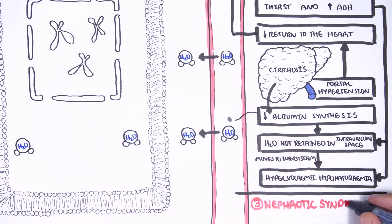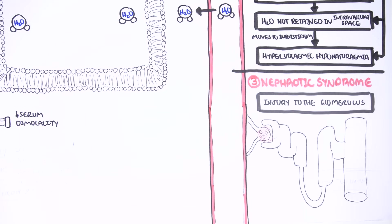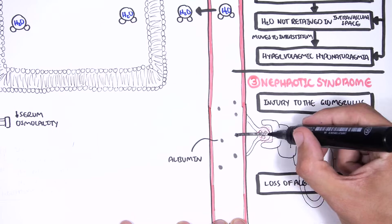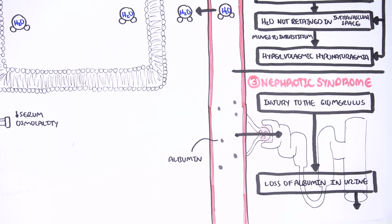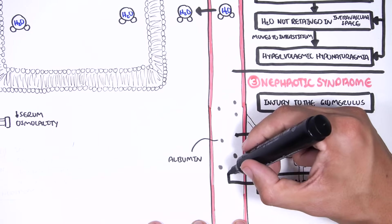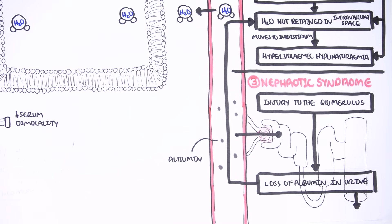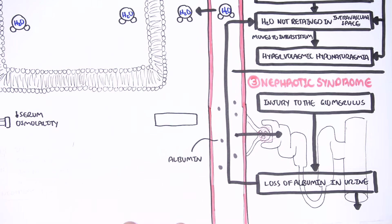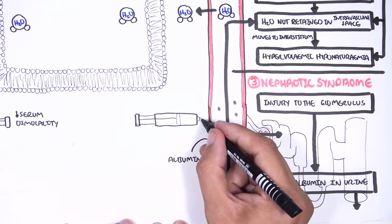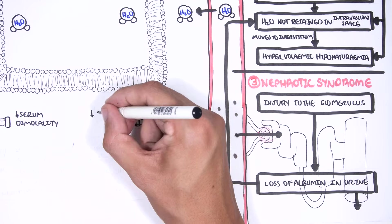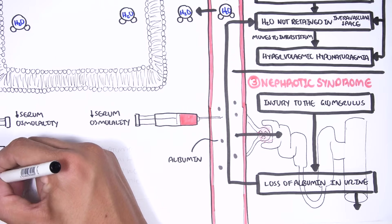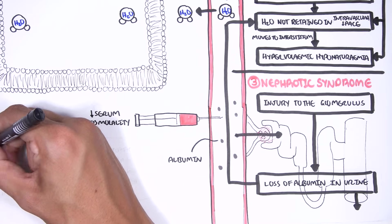In nephrotic syndrome, there is damage of the glomerulus, allowing proteins such as albumin to leak out, resulting in hypoalbuminemia. With low albumin in plasma, water is not retained in the intravascular space, causing a reduced arterial volume, stimulating thirst and antidiuretic hormone release. This leads to hypervolemic hyponatremia. In CCF, nephrotic syndrome, and liver cirrhosis, serum osmolality is low because there are no extra solutes — rather, there are reduced solutes due to reduced albumin.